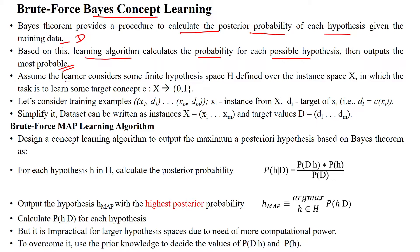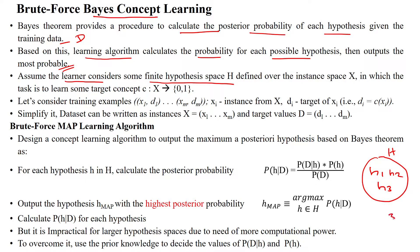Assume the model Bayesian learner considers some finite hypothesis space H. That means if we have hypothesis space H which has a finite number of hypotheses H1, H2, H3 — a finite number of hypotheses. Here we have three hypotheses. So, a finite hypothesis space defined over the instance space X.